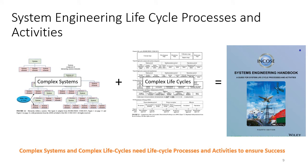So we have these complex systems with lots of non-homogeneous components and dynamic interactions between them, and we have these complex life cycles with at least six stages: concept, development, production, utilization, support, and retirement. Put those two things together and you cannot just do it ad hoc — it has to be a more structured, thought-out process. Thanks to the hardworking INCOSI system engineers, they put together the system engineering handbook to serve as a guideline defining the life cycle processes and activities that will ensure success in these complex systems with complex life cycles.